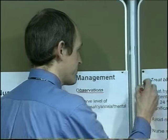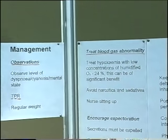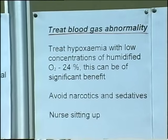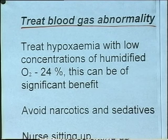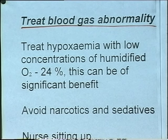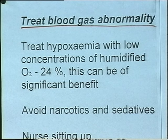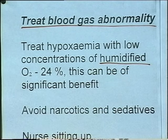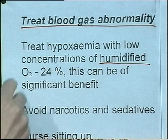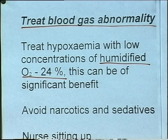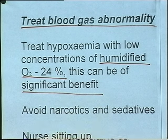Treat blood gas abnormality - it really means do something about the fact that the patient is hypoxic, and try to restore the amount of oxygen in the blood. Hypoxaemia can be treated with low concentrations of oxygen. This should be humidified oxygen to keep the secretions moist, because dry oxygen will dry up the secretions. The percentage given should not exceed 24%, but 24% oxygen can be a significant benefit.